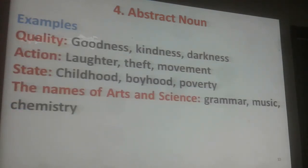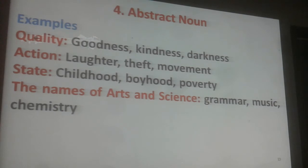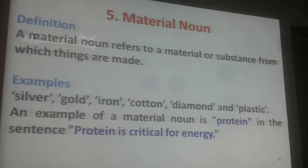Abstract nouns can refer to quality — goodness, kindness, darkness; action — laughter, theft, movement; state — childhood, quiet, poverty; and the names of arts and sciences, for example grammar, music, chemistry. They are all abstract nouns.